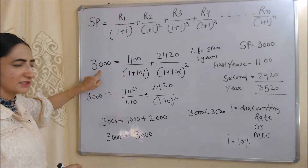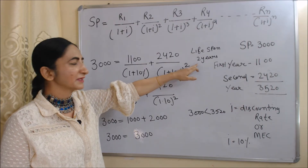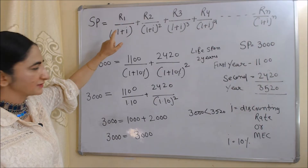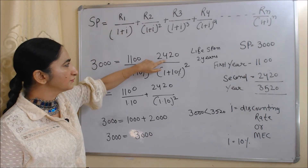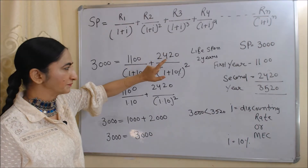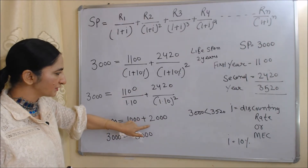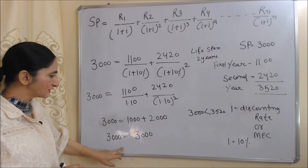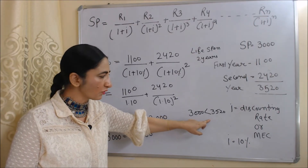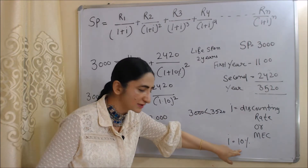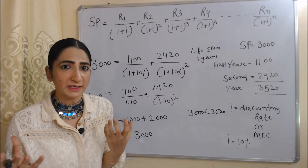The value of supply price is 3,000, the lifespan of the machine is 2 years, the first year expected return is 1,100, and the second year expected return is 2,420. When we solve this equation — 1,100/(1+0.10) = 1,000 and 2,420/(1+0.10)² = 2,000 — both sides give us 3,000. Prospective yield has become just equal to supply price. Earlier prospective yield was more than supply price, but with the help of this discounting rate, they are now equal.